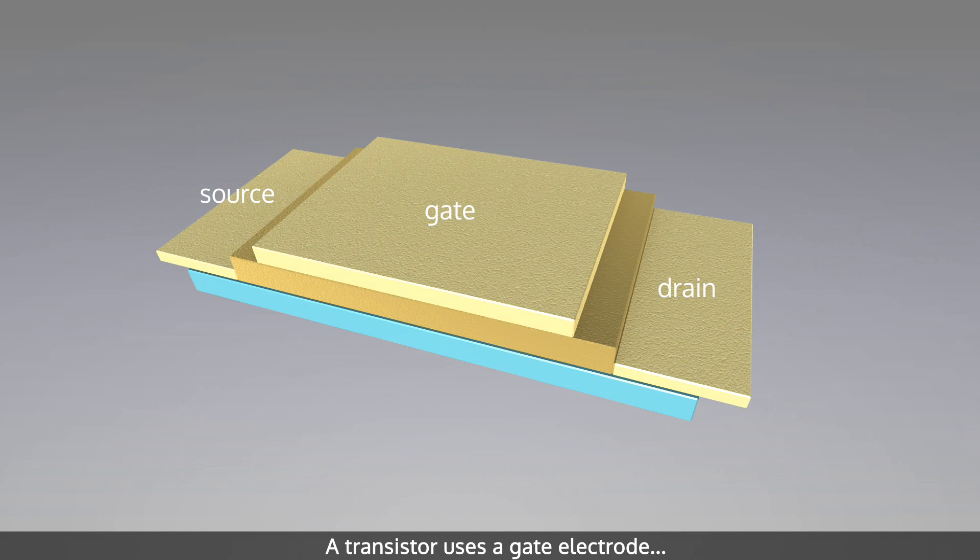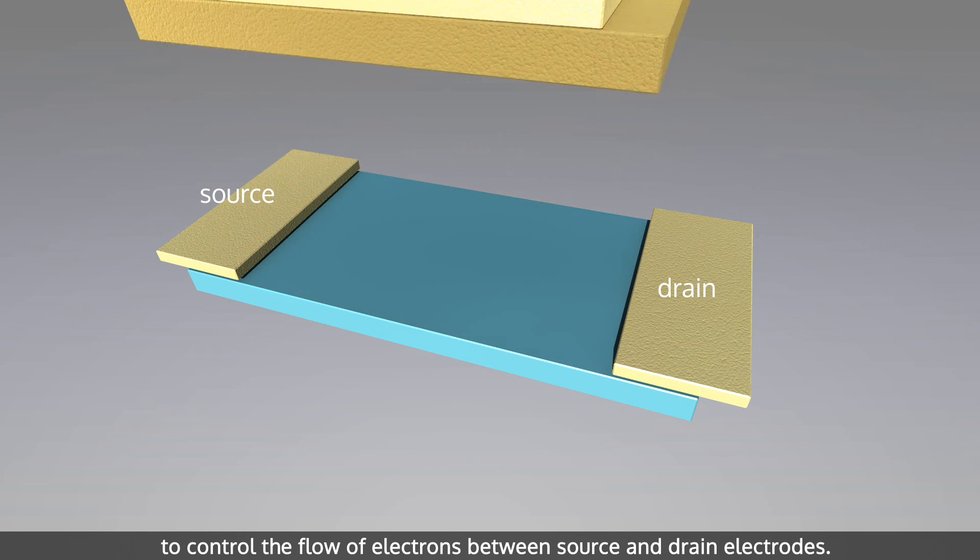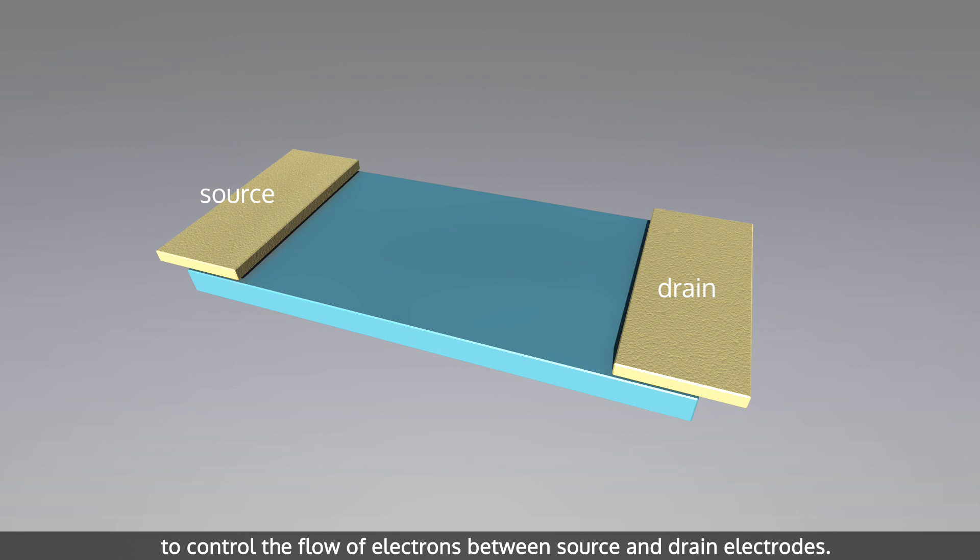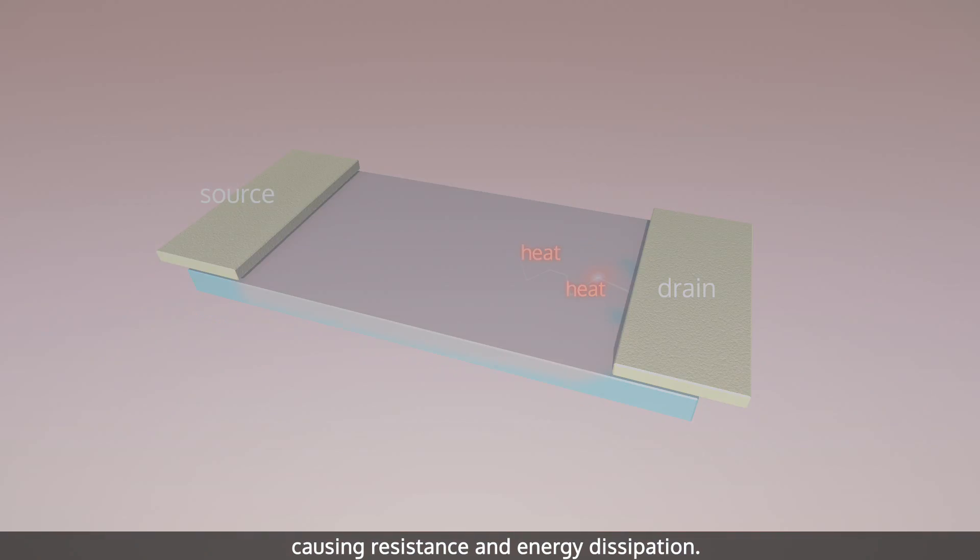A transistor uses a gate electrode to control the flow of electrons between source and drain electrodes. When electrons flow from source to drain, they run into impurities which change their direction causing resistance and energy dissipation.